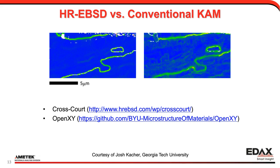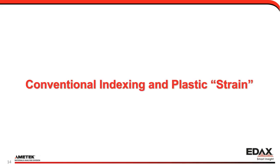There is a commercial system called CrossCourt — you can see a reference there if you want to look — and an open source system on GitHub. Let me come back to more of what we would do with conventional indexing and what we can learn about plastic strain.